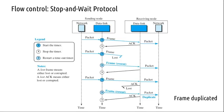In stop-and-wait protocol, the sender sends a frame and waits for an acknowledgement from the receiver. The receiver's data link layer, when it receives a frame, sends an acknowledgement frame. Immediately after sending a frame, the sender turns on a timer and the acknowledgement has to arrive before the timer times out. If the timer times out, the frame is resent.